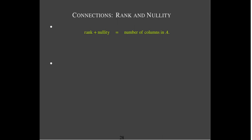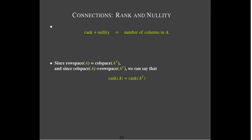Rank and nullity are numbers and their sum always adds up to the number of columns in A. Regarding the transpose, the columns of A transpose are the rows of A, so the row space of A is the column space of A transpose. Similarly, the column space of A is the row space of A transpose. Since the dimensions of all of those are the same, the rank of A equals the rank of A transpose.